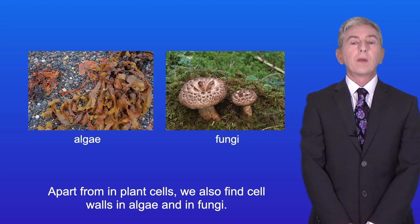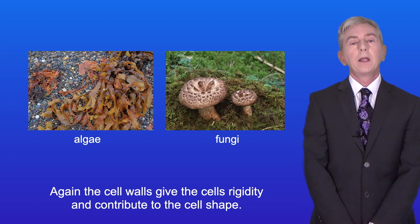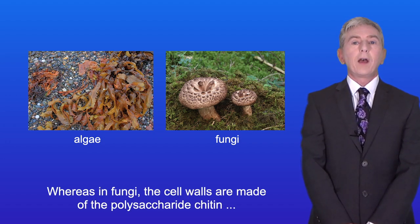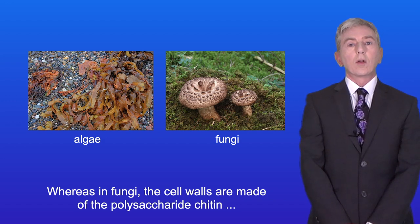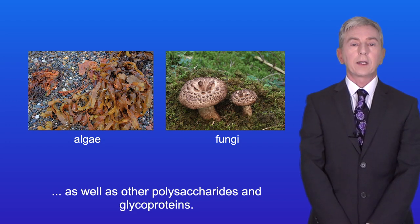Now apart from in plant cells we also find cell walls in algae and in fungi and again the cell walls give the cells rigidity and contribute to the cell shape. In algae the cell walls can contain both cellulose and glycoproteins whereas in fungi the cell walls are made of the polysaccharide chitin as well as other polysaccharides and glycoproteins.